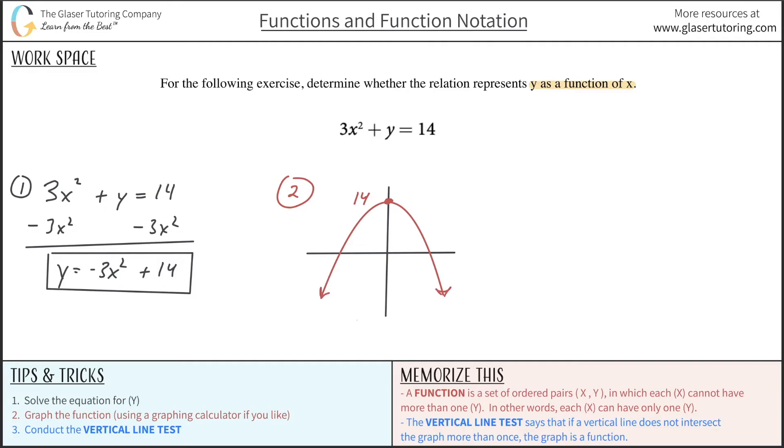So now after we draw the graph or we identify what the graph now looks like, we are now able to conduct our vertical line test. So the vertical line test says that if a vertical line does not intersect the graph more than once, then the graph is a function. So what you do is just draw a couple of vertical lines, see where it intersects the graph.